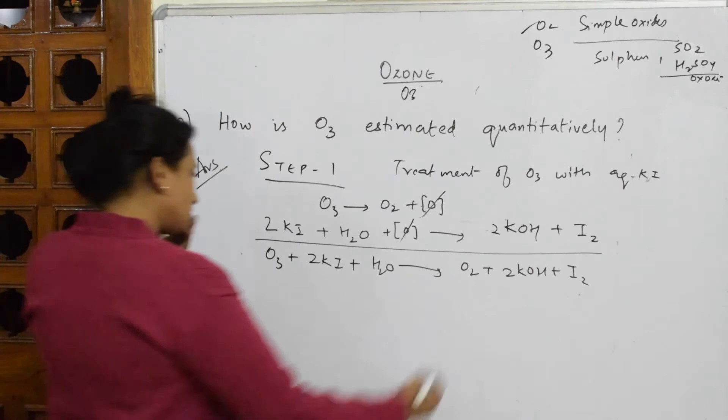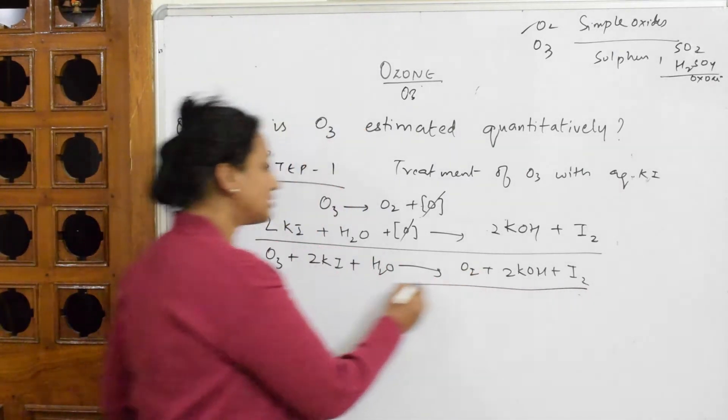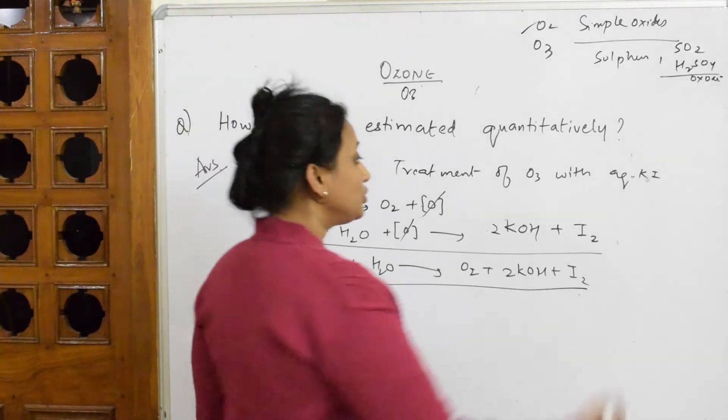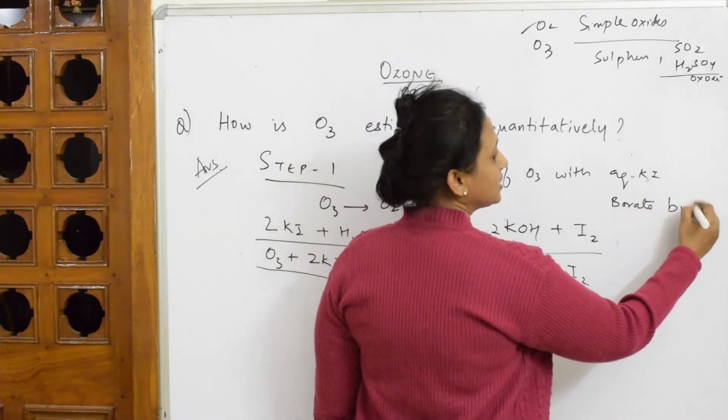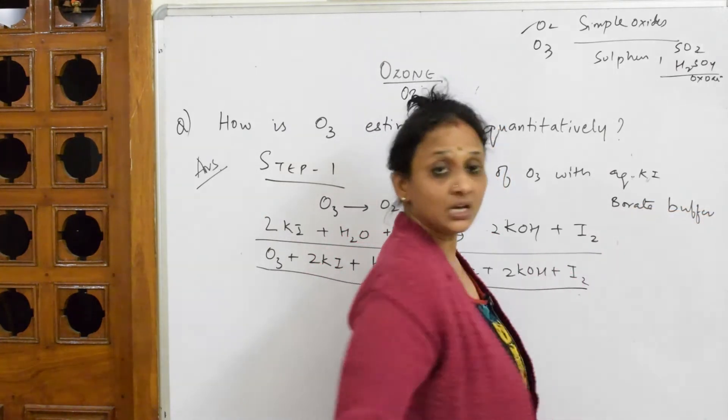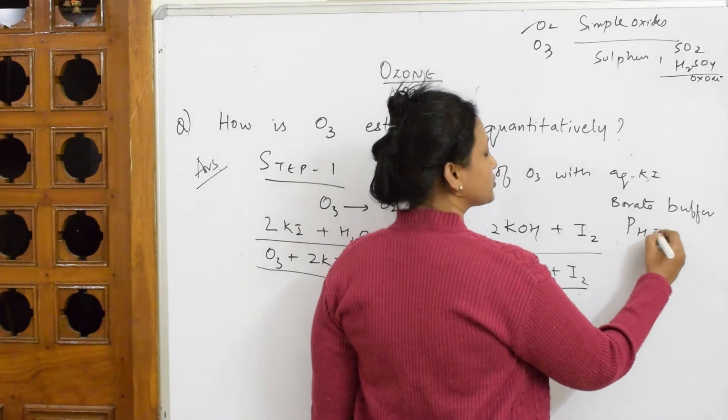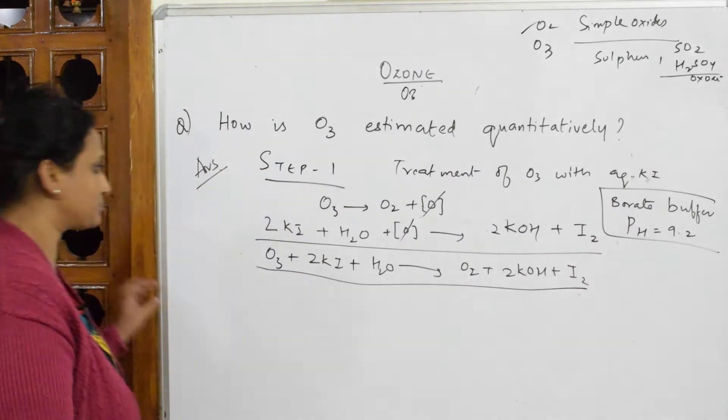Now this is your iodine which you have got. Now this whole thing is using what buffer? You're going to use borate buffer here, which enhances the reaction. This borate buffer is maintained at a pH of 9.2.